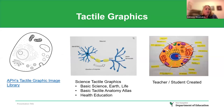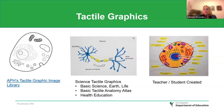Moving into tactile graphics: APH has a tactile graphic image library where graphics can be embossed and will show Braille on them. There's a basic science earth and life graphic package, a tactile anatomy atlas, and one on health education. Teachers of the visually impaired also make custom graphics for students — using different textures like puff paint and foamies, arrows with labels in dark ink, and Braille stickers.